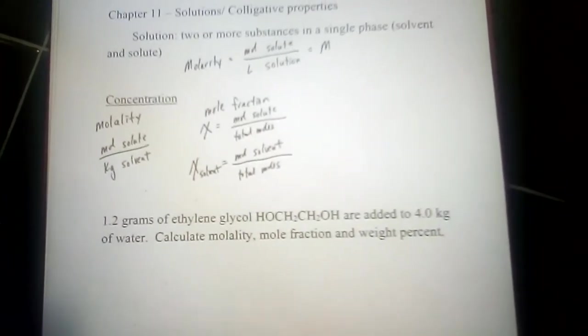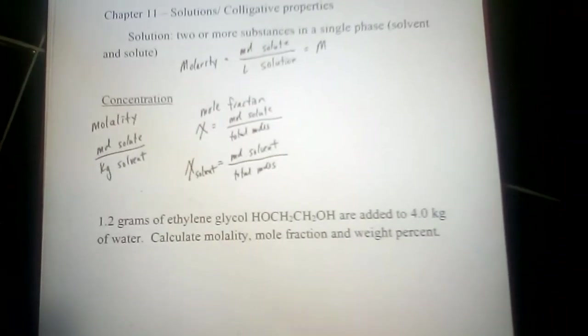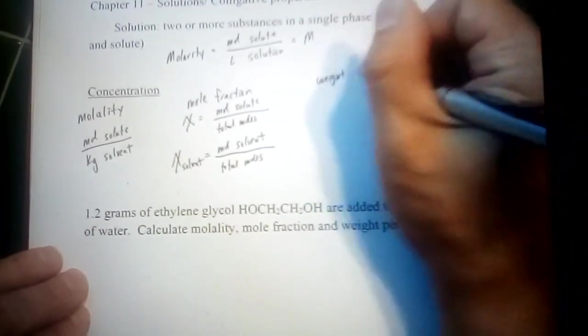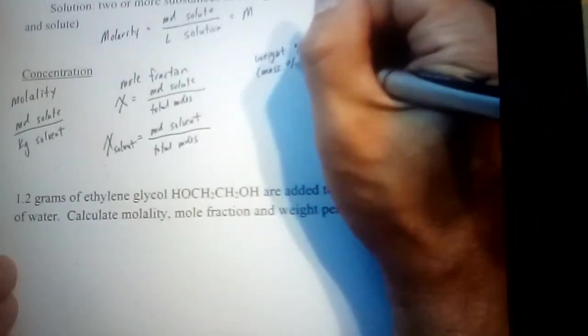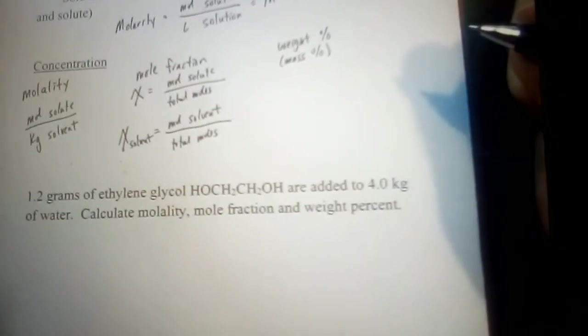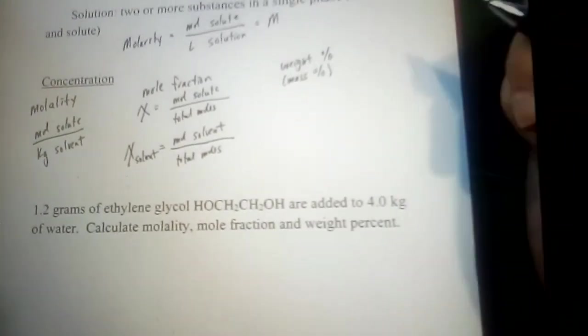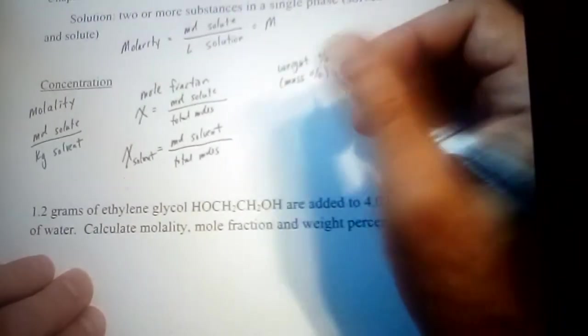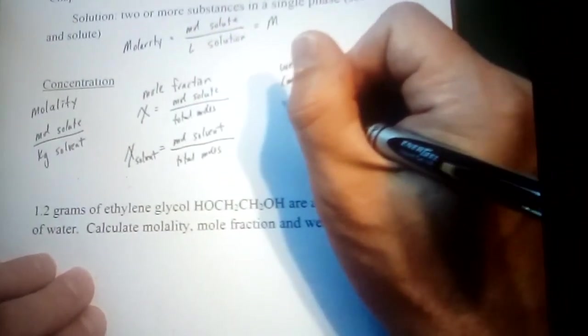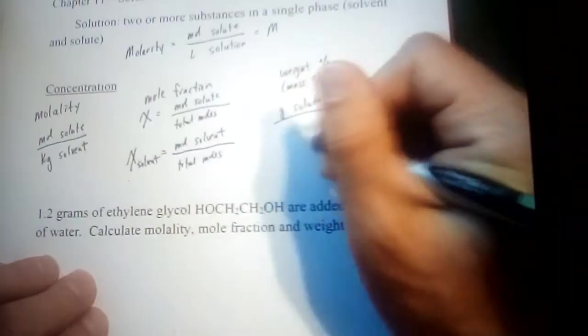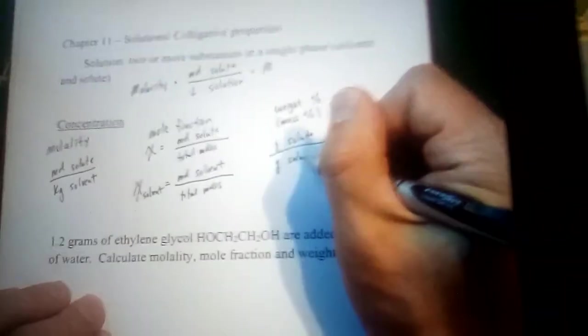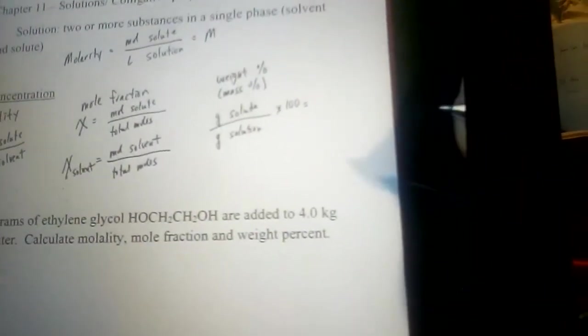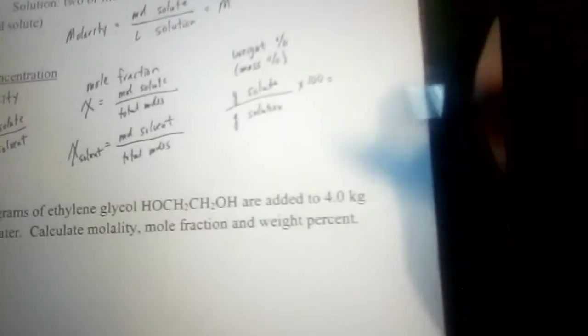And then the third measure of concentration we want to talk about now really isn't particularly new, but what's new is we'll want to be able to move from one version of describing concentration to another. So this would be weight percent, and more technically mass percent is probably a little better way to describe this. As long as we're on earth, weight and mass are the same, but if we're not under earth's gravity, weight and mass aren't quite the same, so mass percent is probably a little better way to describe this. This is the mass of your solute, so this would be grams of solute divided by grams of the entire solution.